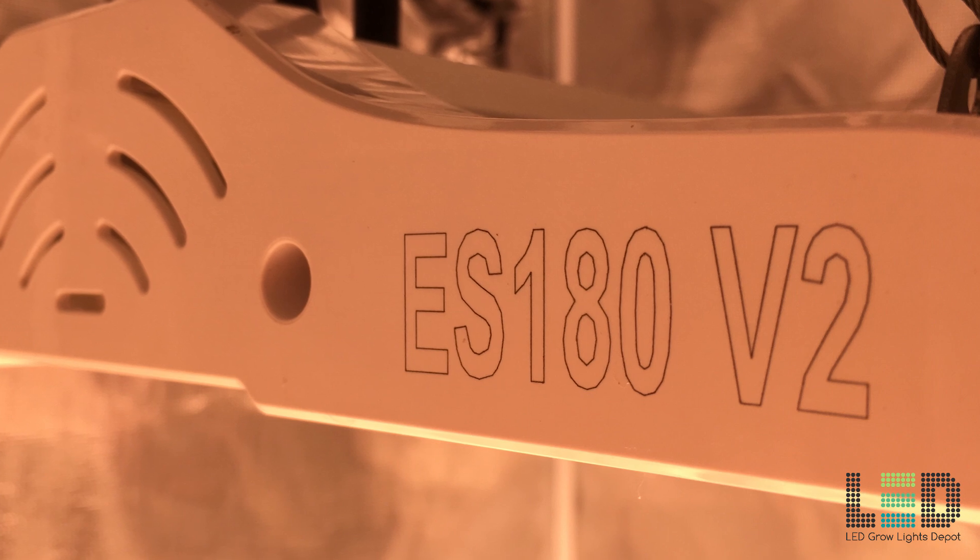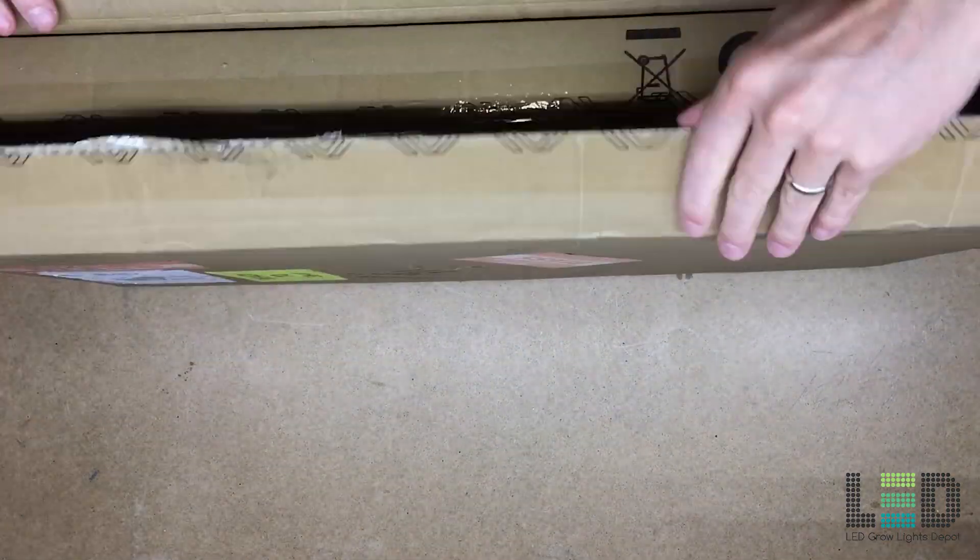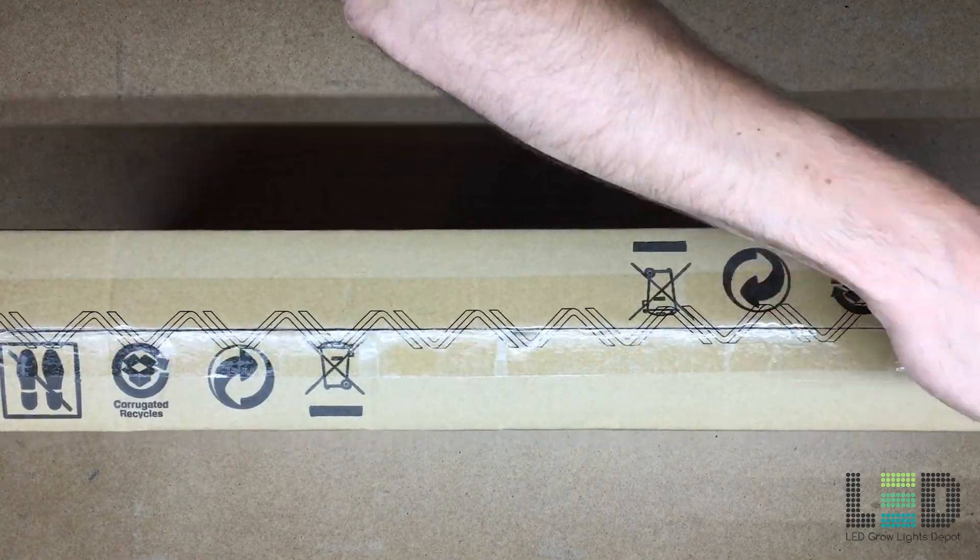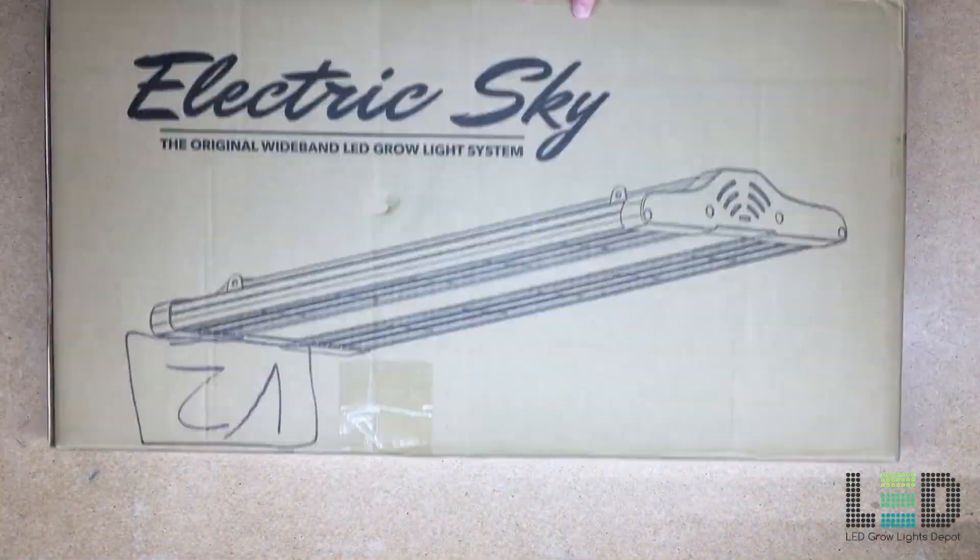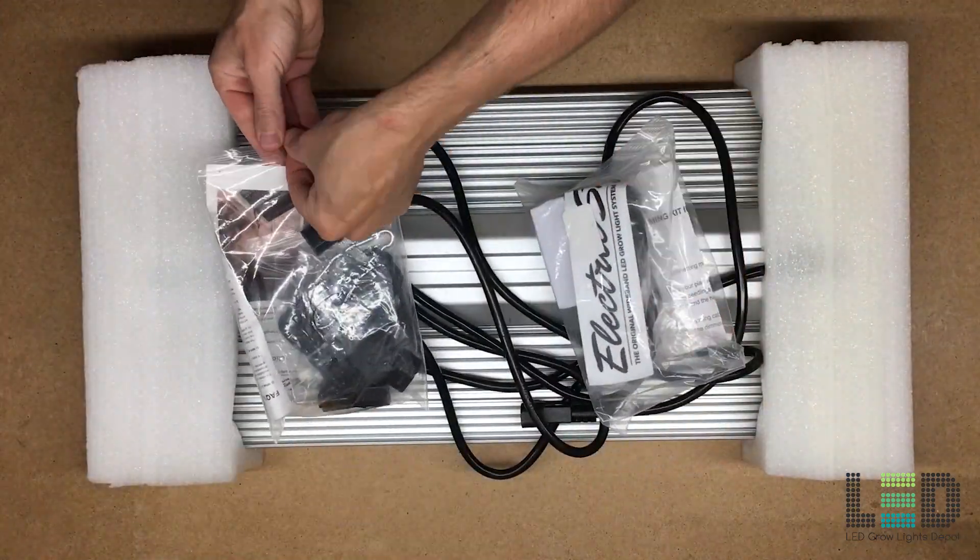I will cover these points more in depth just ahead. All Green Sunshine Company lights come double boxed and discreetly shipped. All of them are well packed, so damage is quite rare. Notice the foam inserts, the light, and some of the accessories.